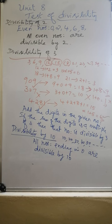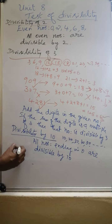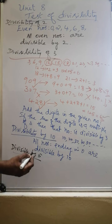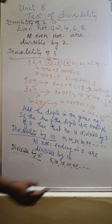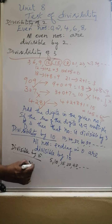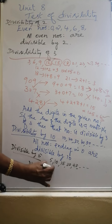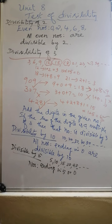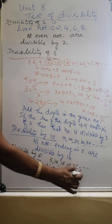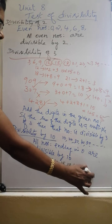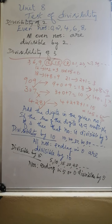Next is divisibility by 5. How to check whether the given number is divisible by 5 or not? In the 5 times table, the numbers are 5, 10, 15, 20, 25, etc. The numbers ending in 5 or 0 are divisible by 5.